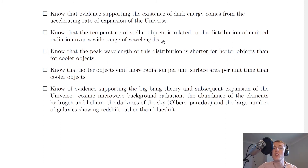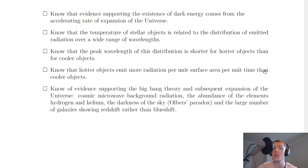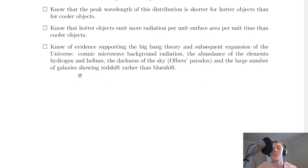Next, know that the temperature of stellar objects is related to the distribution of emitted radiation over a wide range of wavelengths — this was called the black body radiation curve. The peak wavelength of this distribution is shorter for hotter objects than for cooler objects. Hotter objects also emit more radiation per unit surface area per unit time, giving a taller curve with more area underneath.